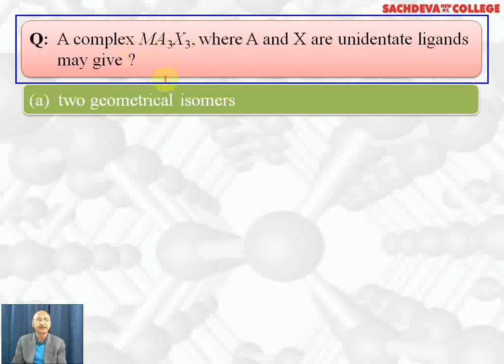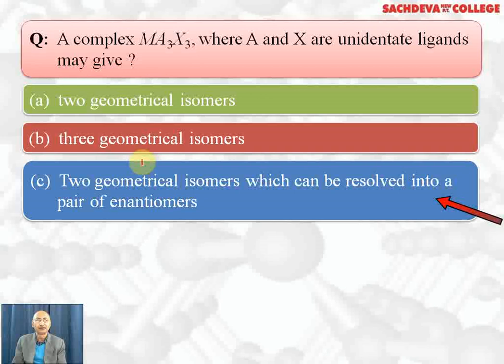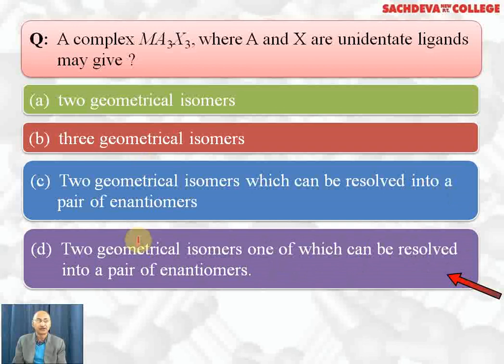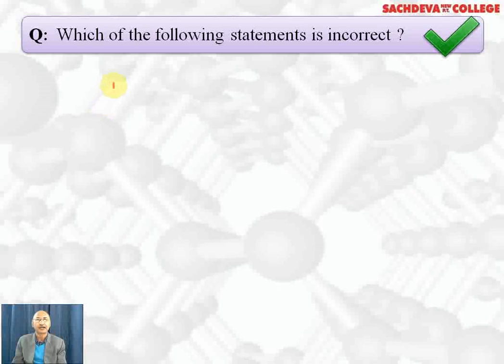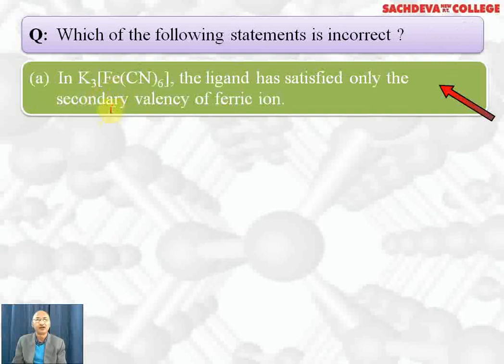For a complex MA3X3 where A and X are unidentate ligands, the correct answer is A: it gives two geometrical isomers. It cannot show optical isomerism at all. The names of these two geometrical isomers are facial (fac) and meridional (mer).